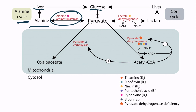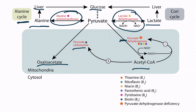Second, pyruvate can be converted into oxaloacetate. This occurs in the liver through the enzyme pyruvate carboxylase, and the oxaloacetate can then be used for gluconeogenesis. Third, pyruvate can be converted to acetyl-CoA, which occurs under aerobic conditions through the enzyme pyruvate dehydrogenase. The acetyl-CoA can then be used in the TCA cycle, fatty acid synthesis, or ketoacid metabolism. Finally, pyruvate can be converted into lactate under anaerobic conditions through the enzyme lactate dehydrogenase. The lactate can then go back to the liver and be converted back into glucose via gluconeogenesis. This process is called the Cori cycle.